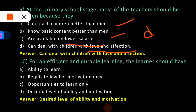Question ten: For efficient and durable learning, the learner should have? Option A: ability to learn. Option B: requisite level of motivation only. Option C: opportunities to learn only. Option D: deserved level of ability and motivation. Option D is the correct answer. For efficient and durable learning, the learner should have a deserved level of both ability and motivation — not ability alone, as motivation is equally important.